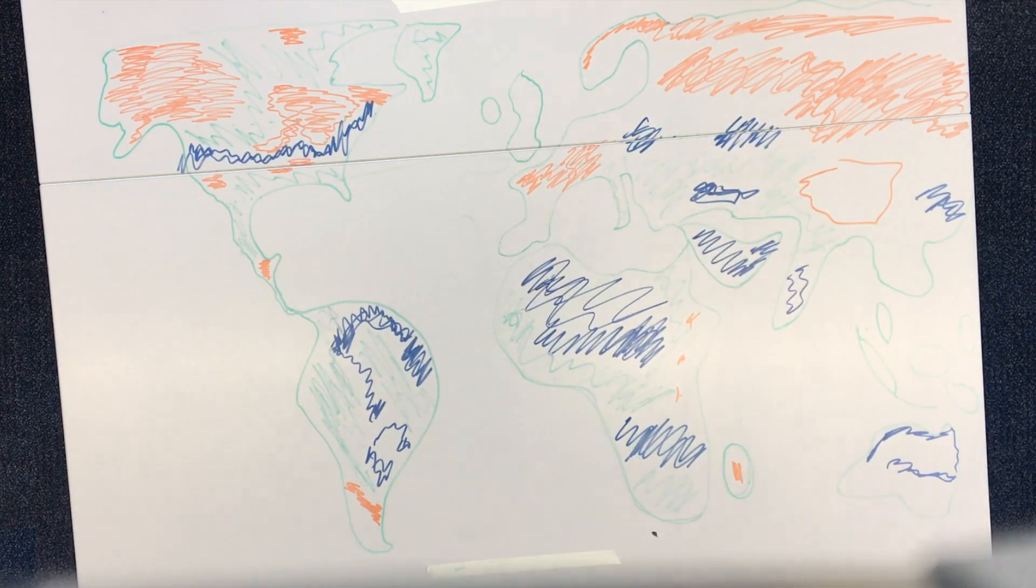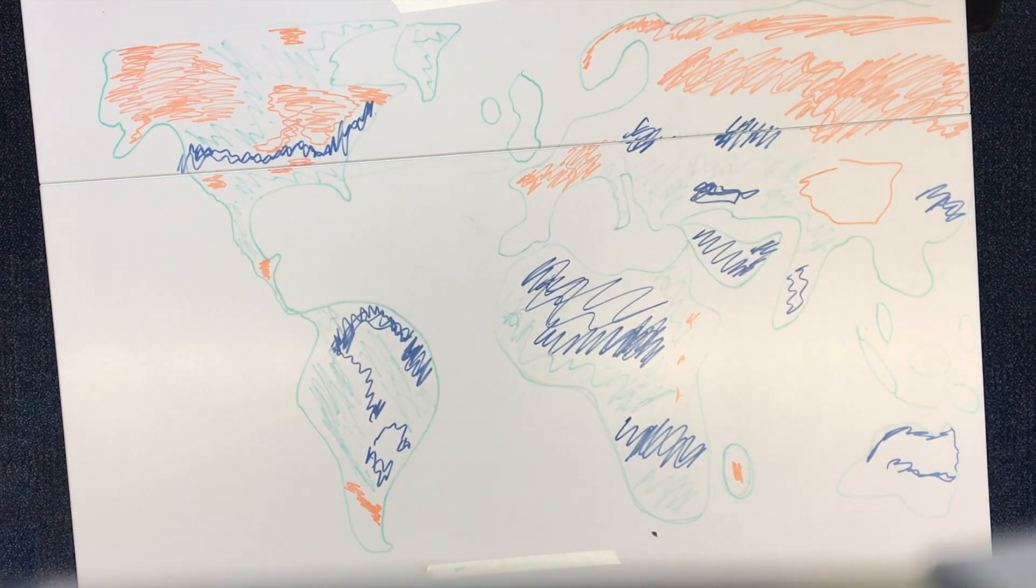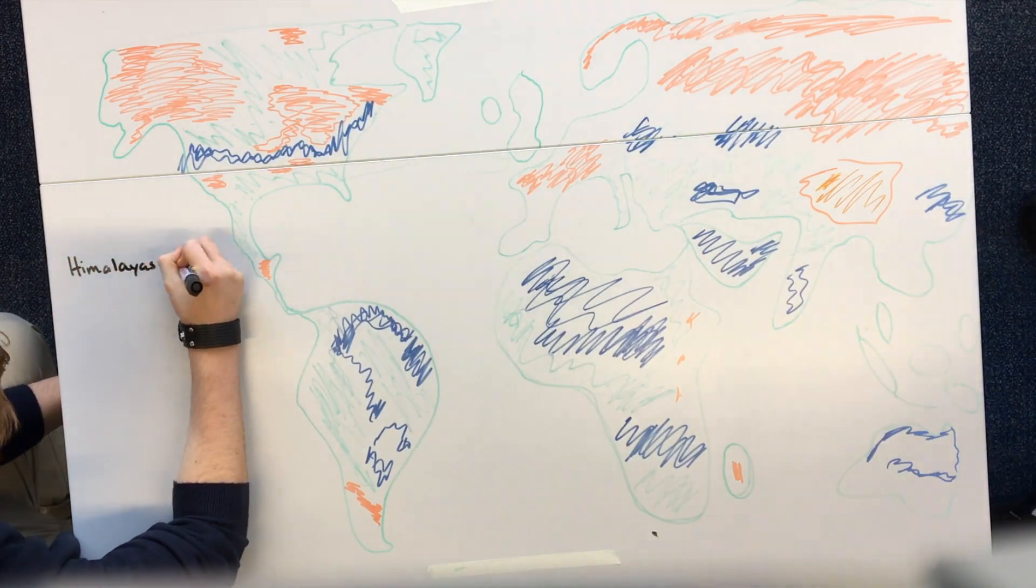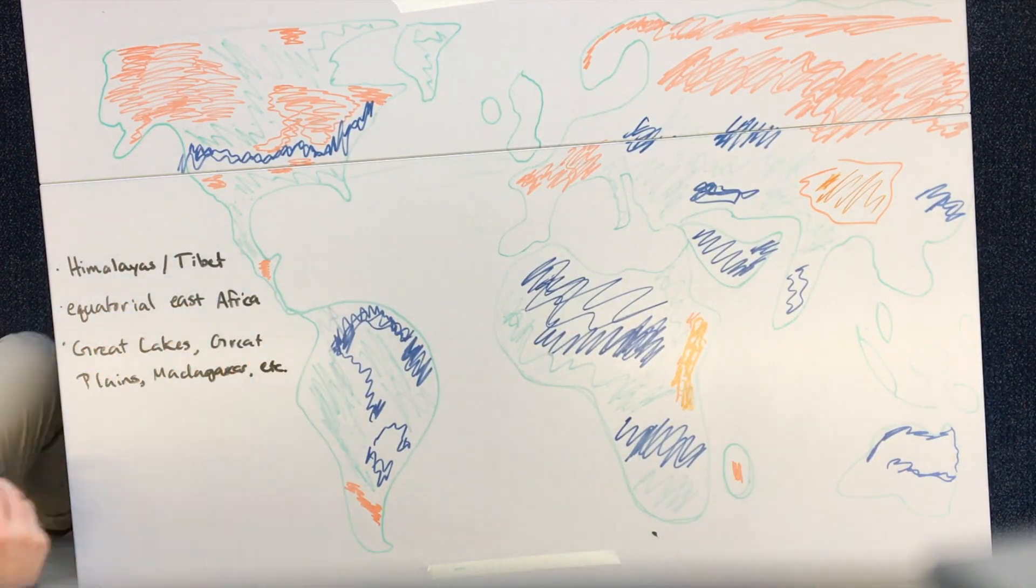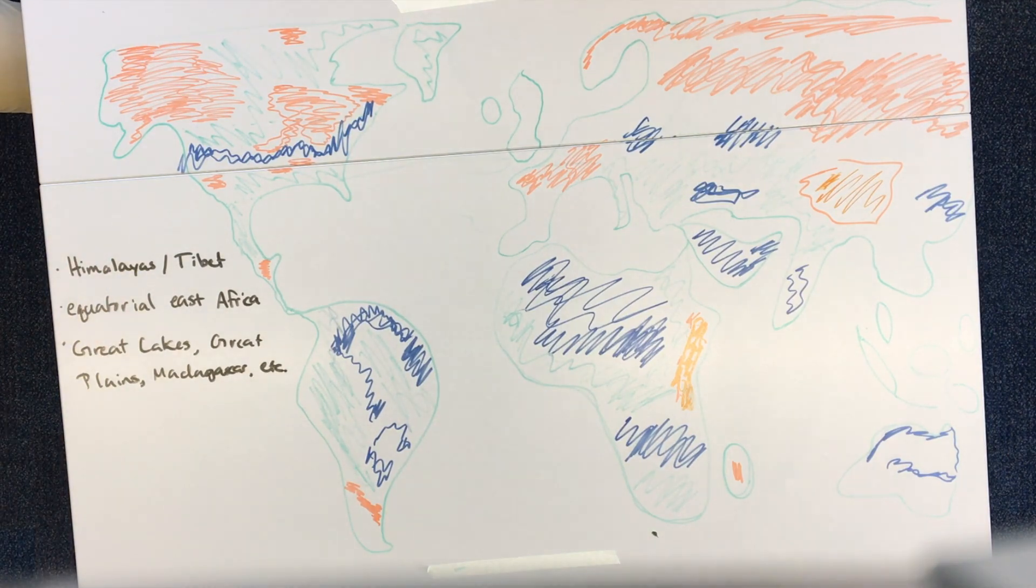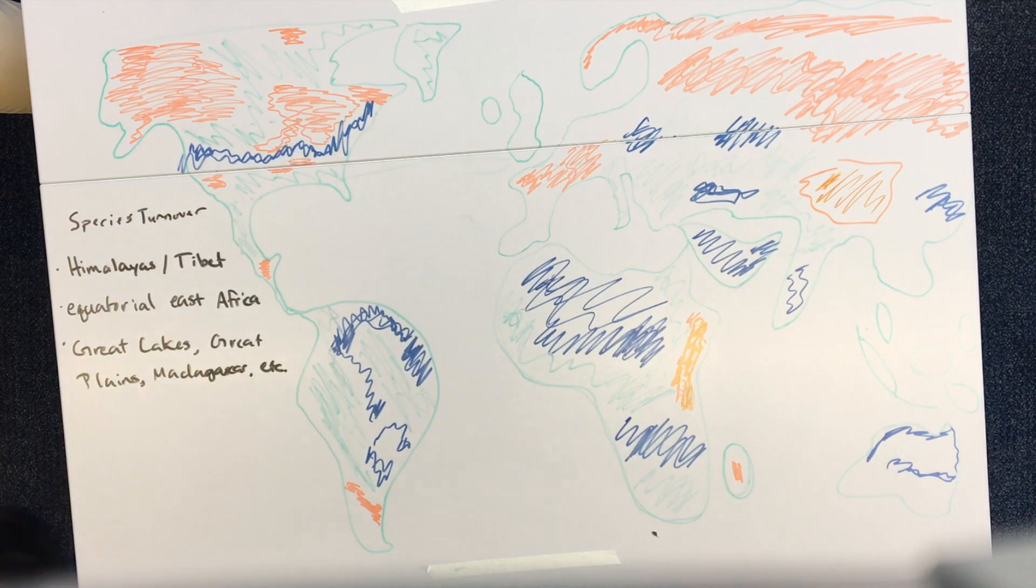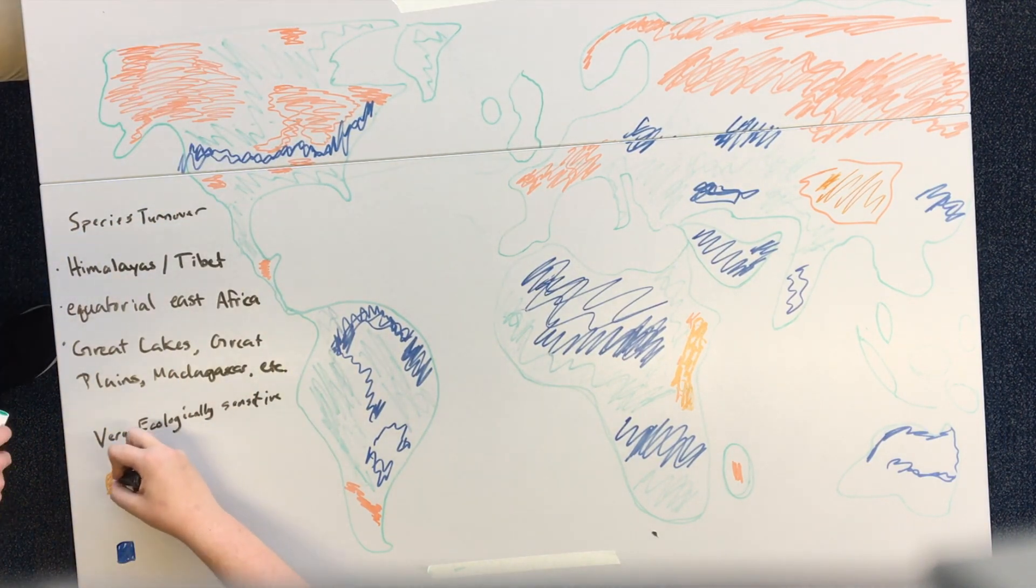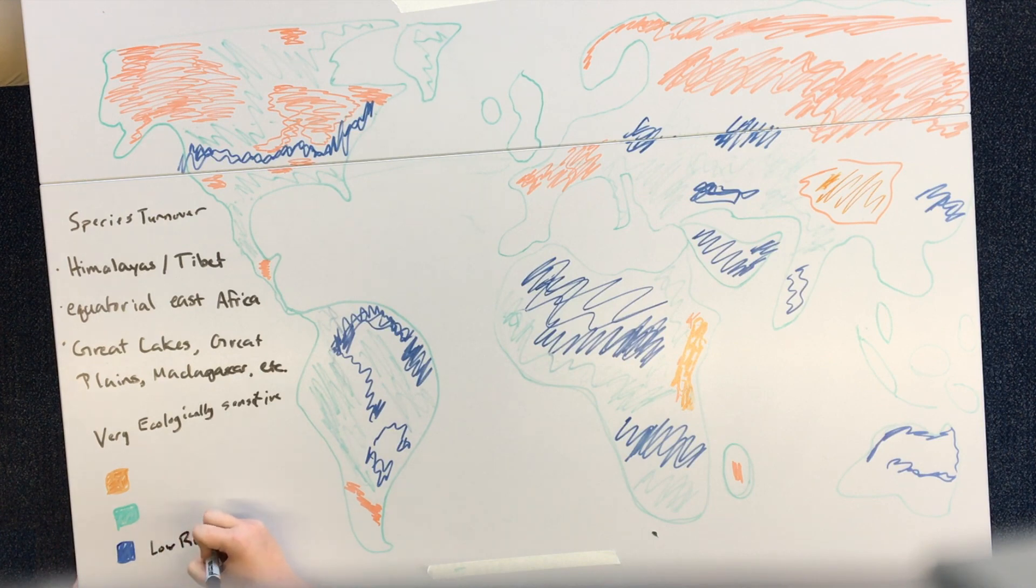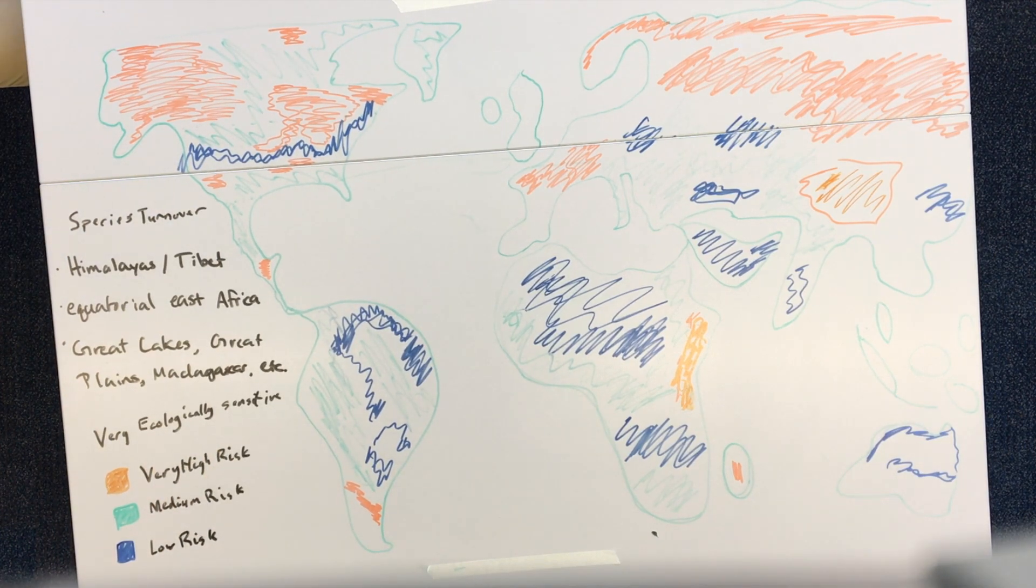They've also managed to identify what parts of the world are most sensitive to such change and ecologically sensitive. This map demonstrates it. The red or orange parts are indicative of the most sensitive regions. The green, or the light blue depending on your opinion, is indicative of medium sensitivity, and the dark blue is indicative of low sensitivity regions.